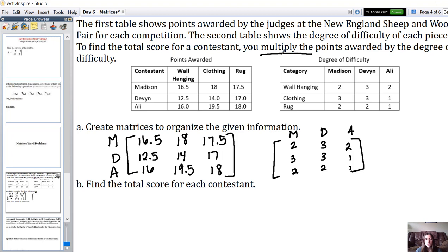Then it says to find the total score, we have to multiply the points awarded by the degree of difficulty. So we're going to be multiplying the first matrix by the second. Now the difference here, in this type of word problem, is we only care about how Madison's scores did relative to Madison's degree of difficulty. So we're only going to be multiplying Madison's row by Madison's column, Devon's row by Devon's column, and Allie's row by Allie's column. We're not going to do every single row with every single column. We're doing it based on the person.